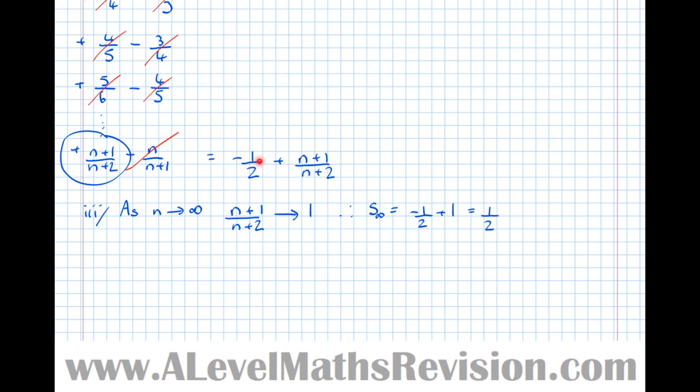So this minus 1 half stays no matter what the value of n is. This is still always minus 1 half. And as this approaches infinity here, as n approaches infinity, the plus 1 and the plus 2 become so insignificant that the numerator and denominator become identical, i.e. n over n, which is just 1.